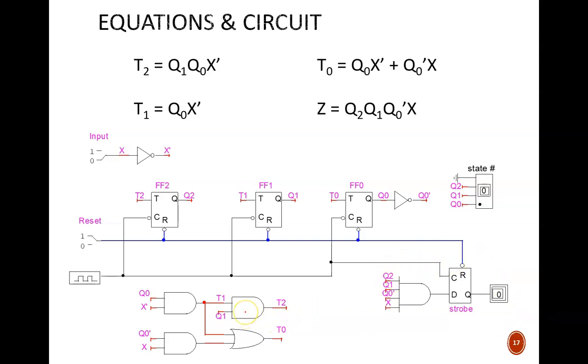Second, I got nifty with the next state logic. You certainly could wire this in standard SOP equations. But I saved a couple gates by noticing that the T1 expression, Q0 and X', is found in both of the other T equations. So, this AND gate provides Q0 and X'. This next AND gate provides Q0 and X' and Q1, the expression for T2.